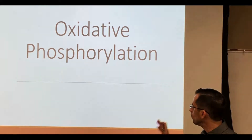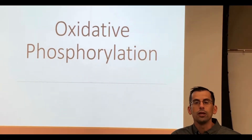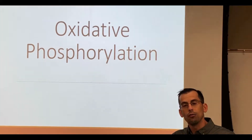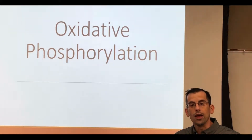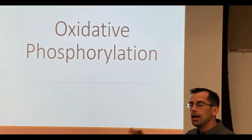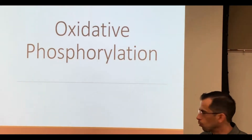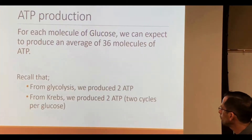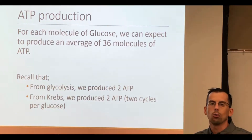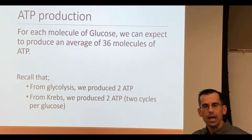If you haven't already, hit the link down below. Start with glycolysis, look at how it proceeds into the next video of Krebs, and then a continuation of those two into oxidative phosphorylation. For each molecule of glucose, we can expect to get a total of 36 ATPs.